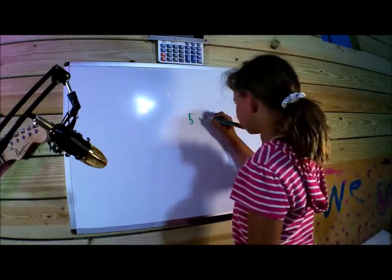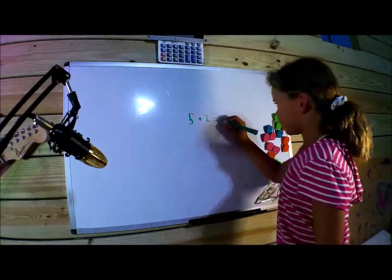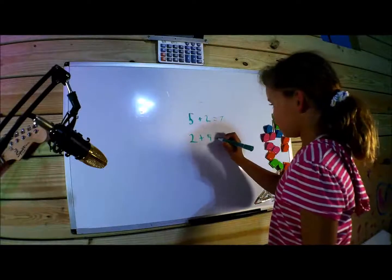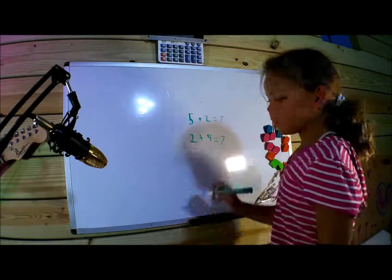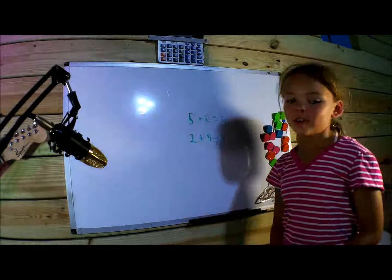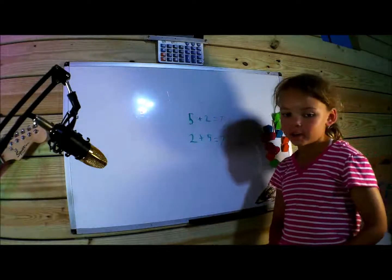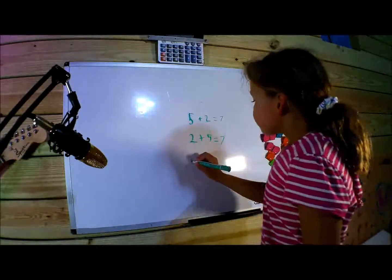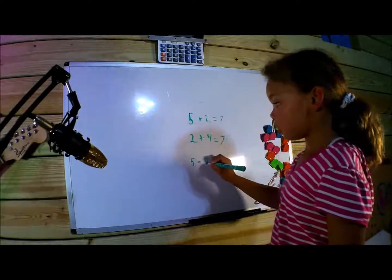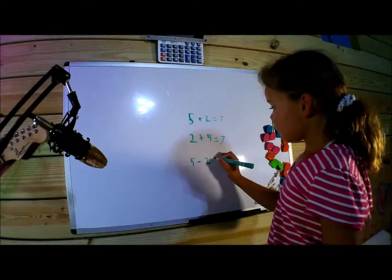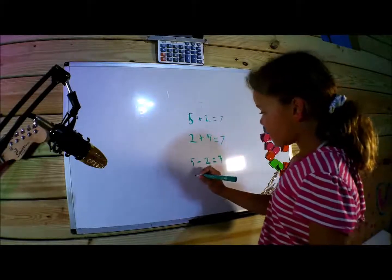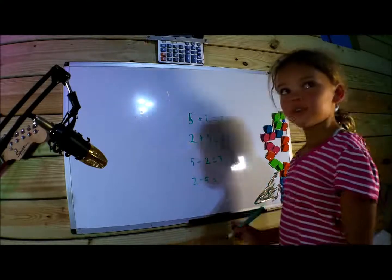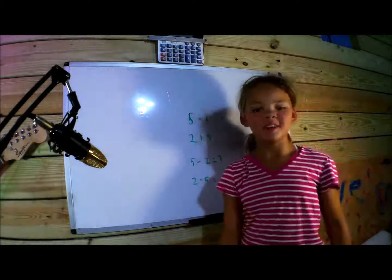5 plus 2 equals 7, and 2 plus 5 equals 7. You can see that the order doesn't matter. In subtraction, order is very important. 5 minus 2 equals 3, but 2 minus 5 — you can't do that. It doesn't work that way.